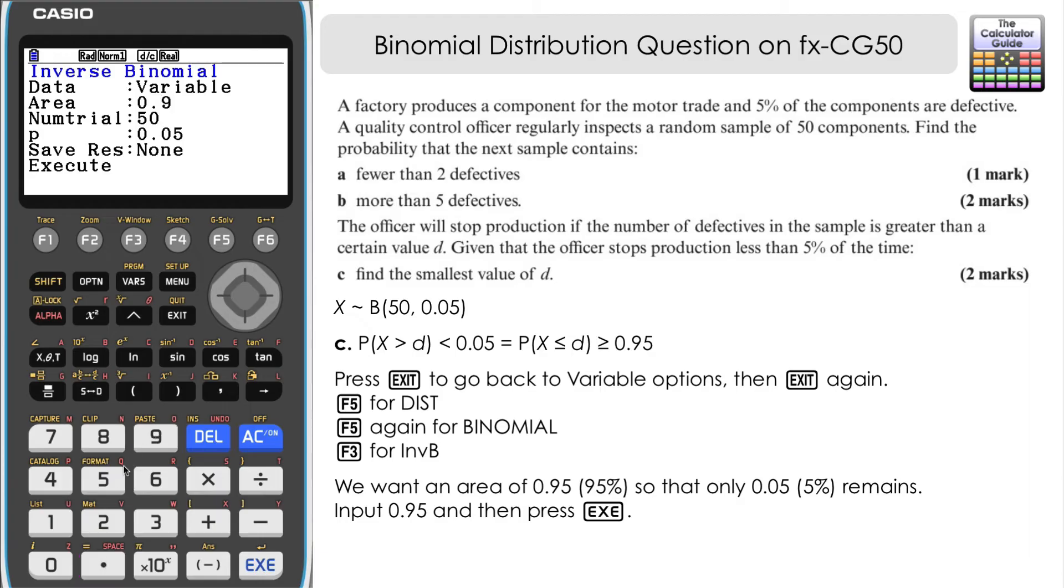So we're going to input an area here of 0.95. And everything else, we can just keep the same on here. Scroll down to execute. If we execute, then here we have our smallest possible value of D that will satisfy that. So that's five, five defectives. So the answer to part C there is five.